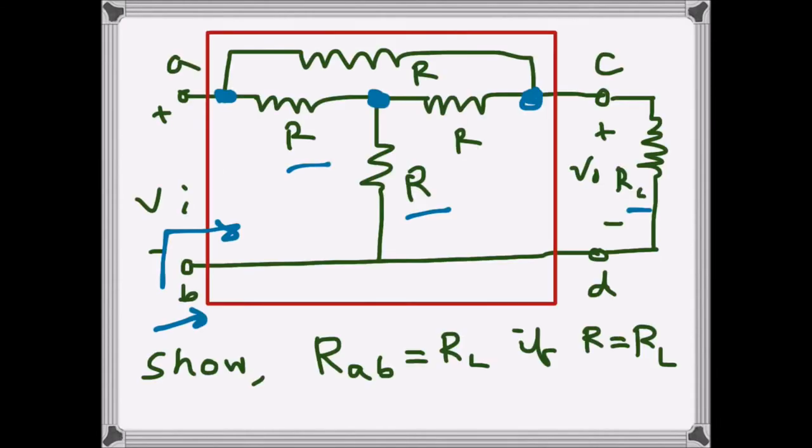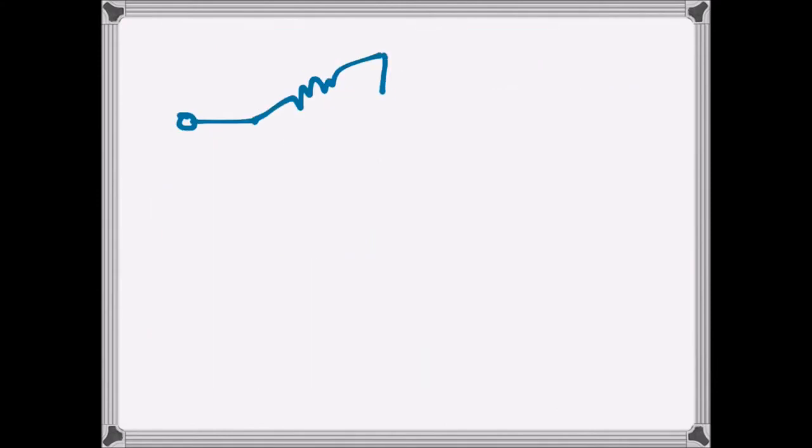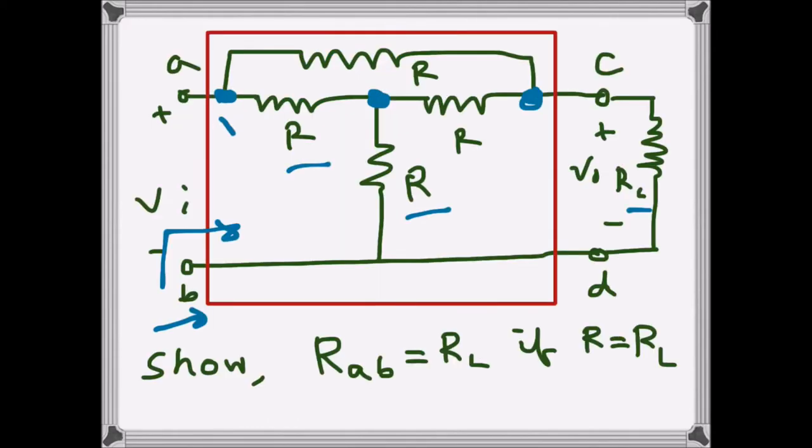And from that we have these two resistances, both are R, so we will have something here. Let's draw it like that. And then we have here which is R, so this will be another. So if we call this as X, Y, and Z maybe.